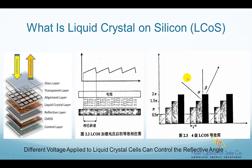Before we introduce liquid crystal on silicon-based WSS, we have to understand what is liquid crystal on silicon, and how it redirects a light beam to different angles. Liquid crystal on silicon was first used for display applications. The structure is that many liquid crystal cells are made on a silicon wafer. As shown in the left picture, a liquid crystal cell layer is sandwiched between an upper transparent electrode layer and a bottom seamless electrode control layer. There is also a reflective layer to reflect light. This is called a reflective liquid crystal on silicon. The phase delay of reflected light can be controlled by the voltage applied on the liquid crystal cell. When a pattern of phase delays are applied to multiple liquid crystal cells, as shown in the center picture, it begins to function like a reflective grating. Different phase delay patterns correspond to different reflective angles, as shown in the right side picture.